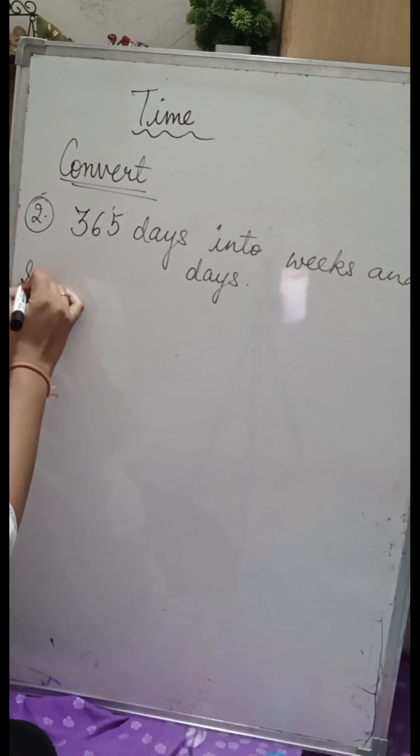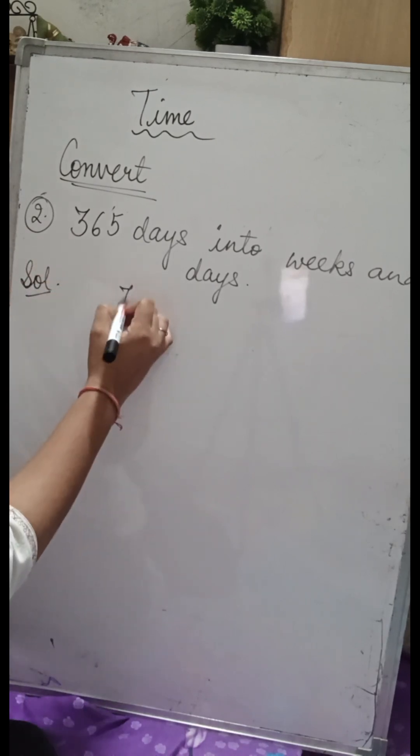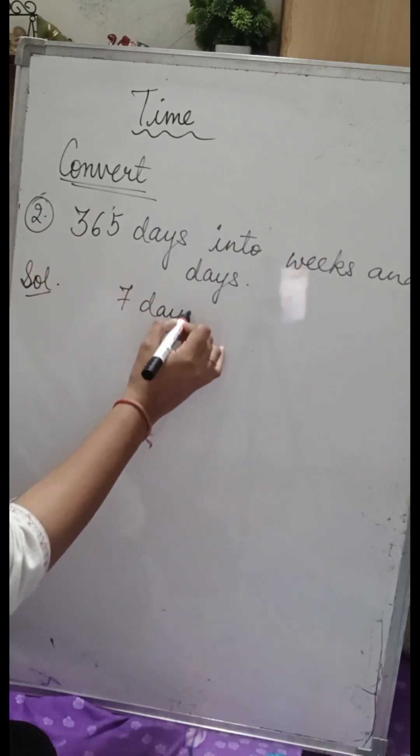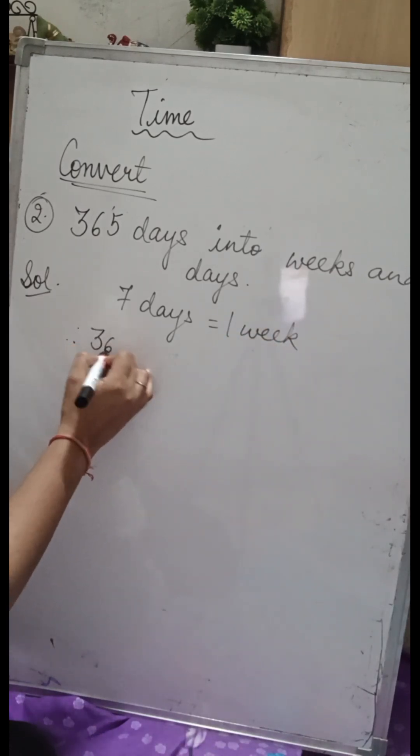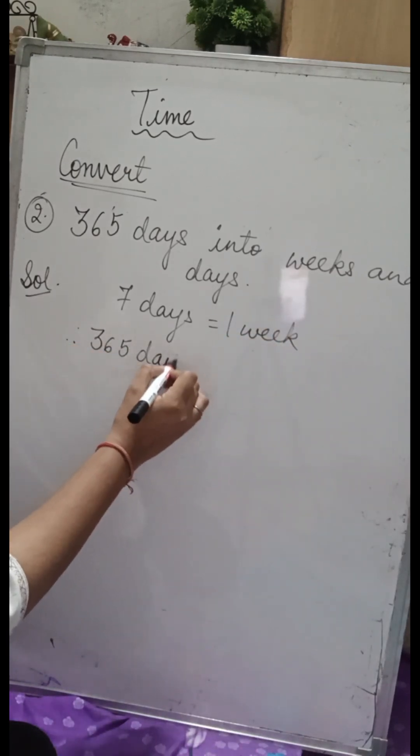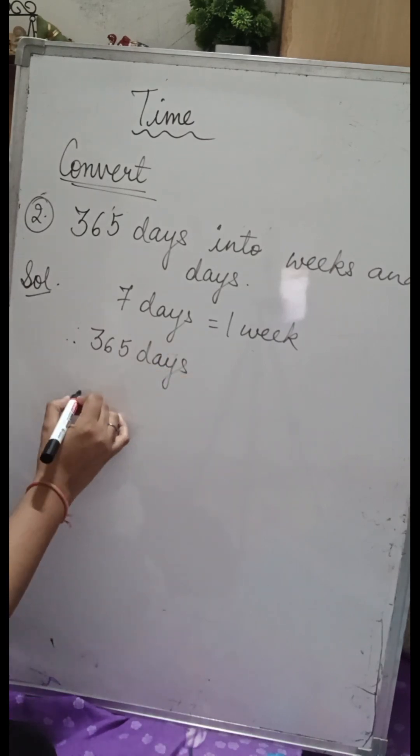Now let's see the second question. We have to convert 365 days into weeks and days. We know seven days makes one week, so what we have to do is divide 365 days by seven.